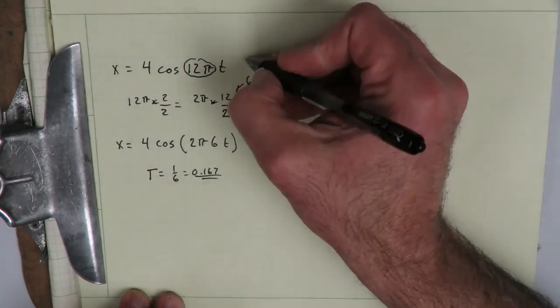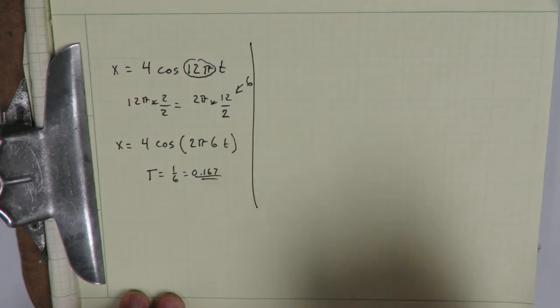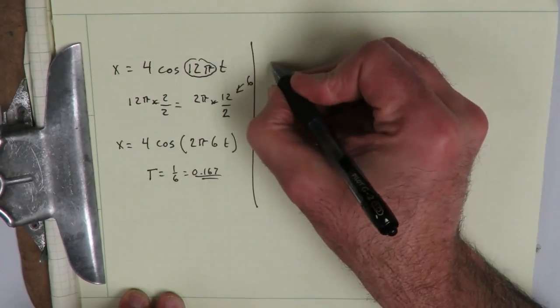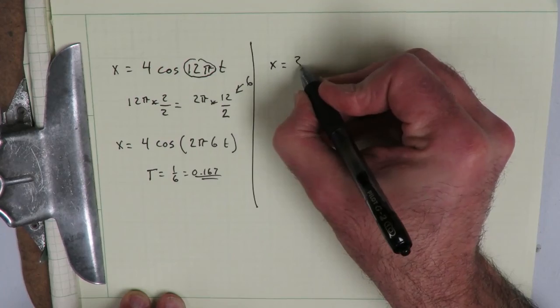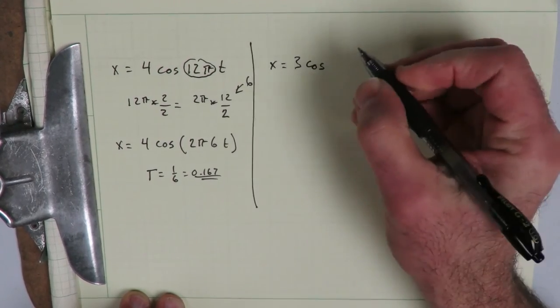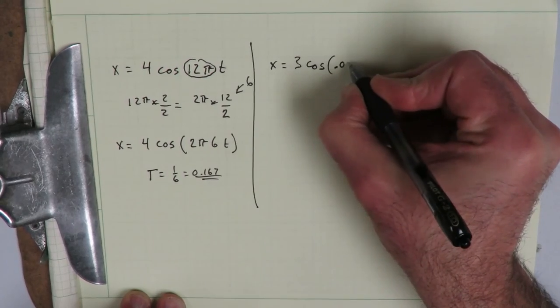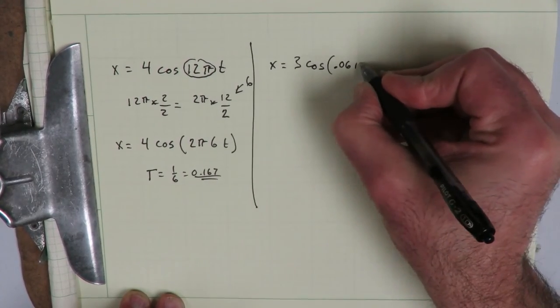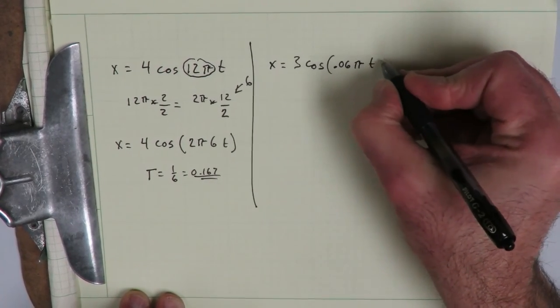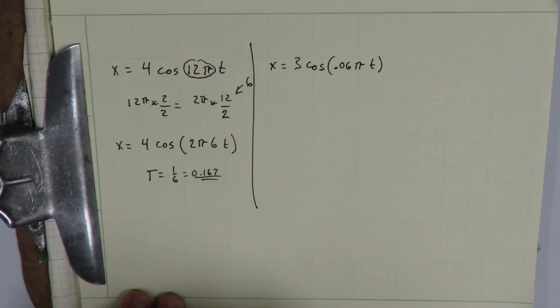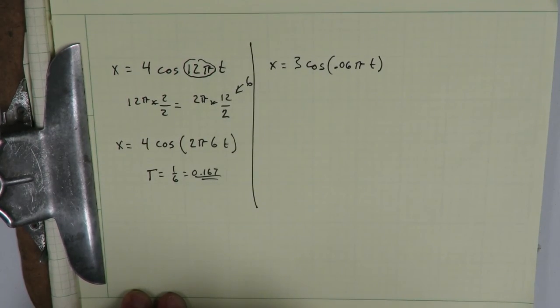Alright, now let's do another one. How about x is equal to 3 cosine 0.06 pi times t. Okay, so pause the video for a moment here and see if you can work this one out and then we'll come back to it.